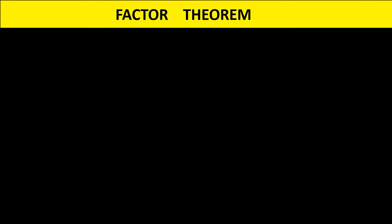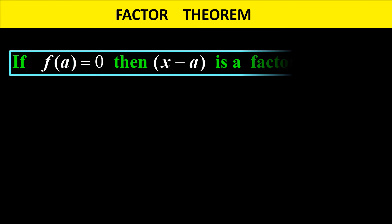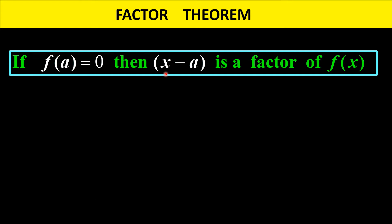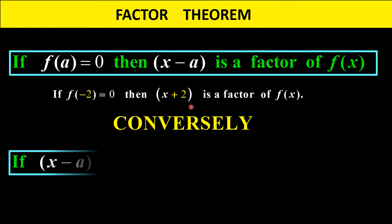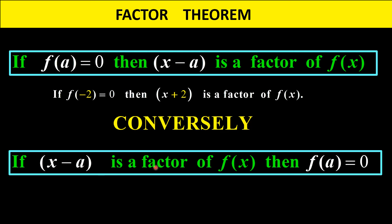Let me briefly go over the factor theorem. If f(a) is equal to zero, then x minus a would be a factor of the polynomial f(x). For example, if you have f(negative 2) and you determine the value zero, then x plus 2 would be a factor of the polynomial. Conversely, if x minus a is a factor of a polynomial, then f(a) would be equal to zero.